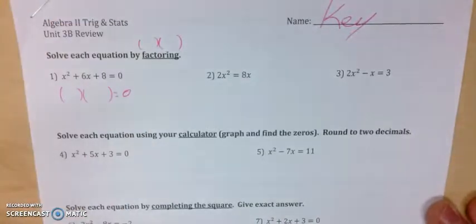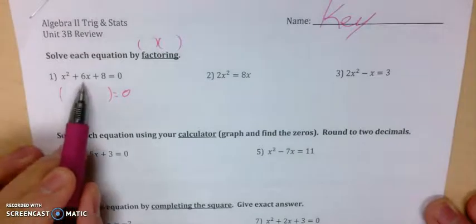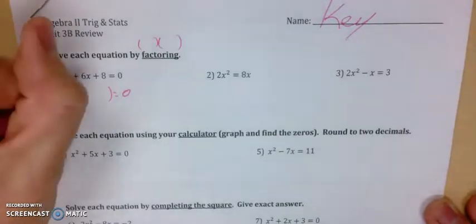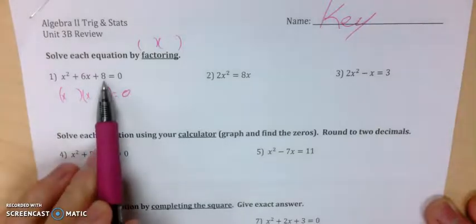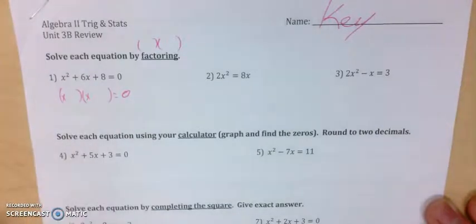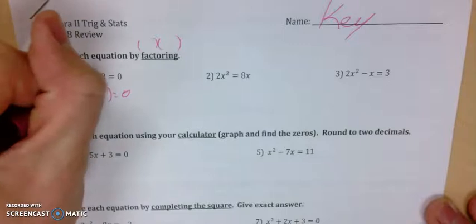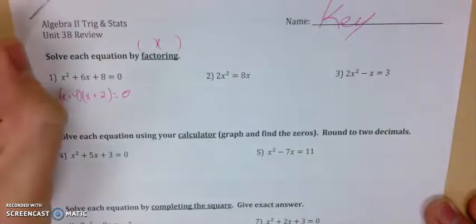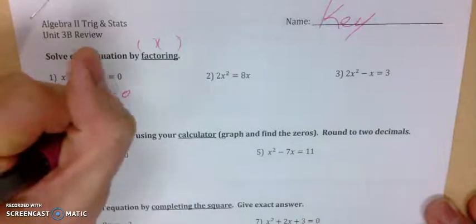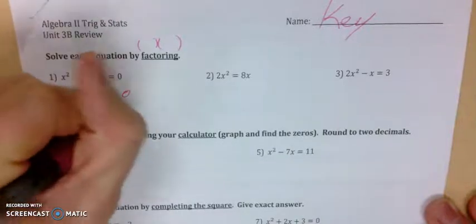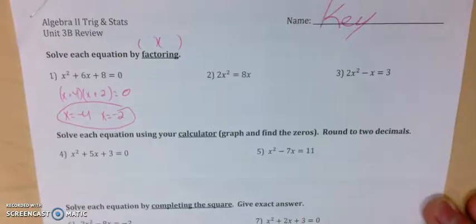Every time I go through, I look for a GCF. On number one there is no GCF, so I can start off with an x in each parentheses chunk. Now I need two numbers that multiply to be 8 but add up to 6 — those two numbers are positive 4 and positive 2. So my answers here are x equals negative 4 and x equals negative 2, based on the zero product property.